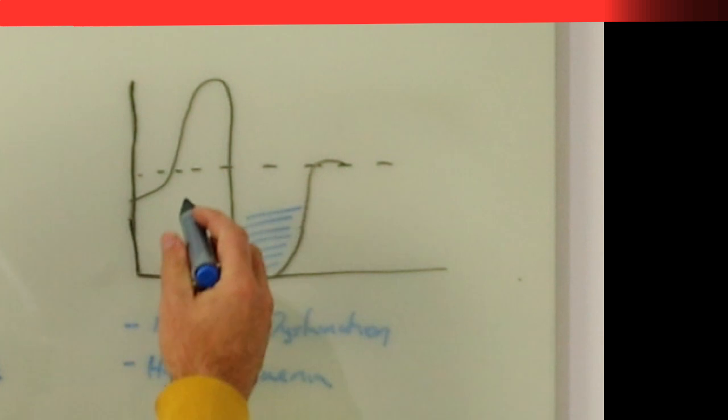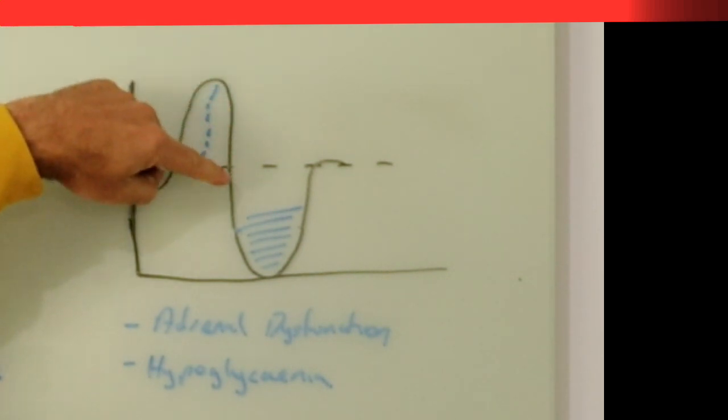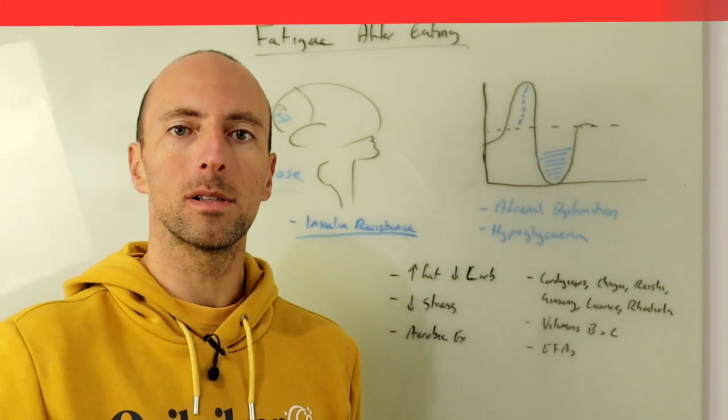We get a high amount of insulin that gets released and we get that high amount of insulin release we all of a sudden get this huge drop in our blood sugars and this is what we call a reactive hypoglycemia.